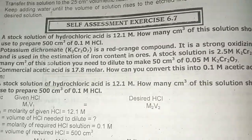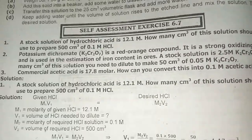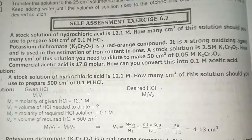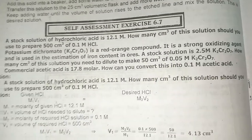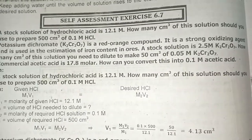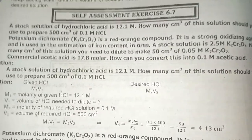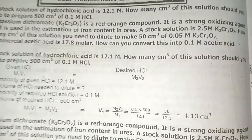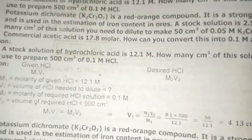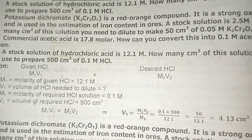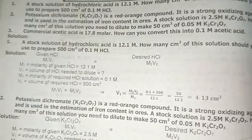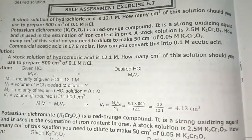Now you will see 6.7. This is very important — the formula is M1V1 = M2V2, which relates the initial solution and the final solution. This formula applies for acid or base dilution problems.